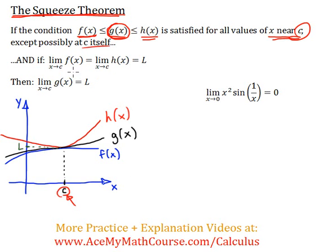And if the limit as x approaches c of f of x is equal, so f of x is the bottom function, the blue line in this case here, and the limit as x approaches c of h of x, in this case it's represented by the red line.